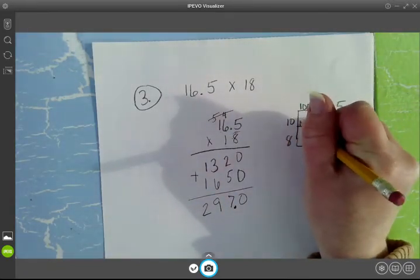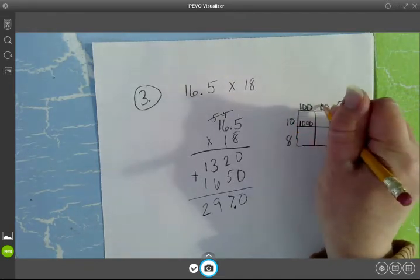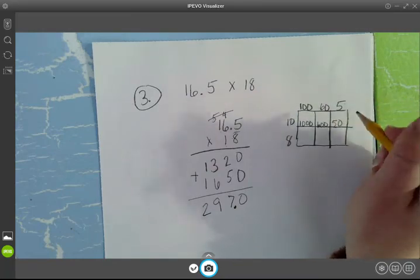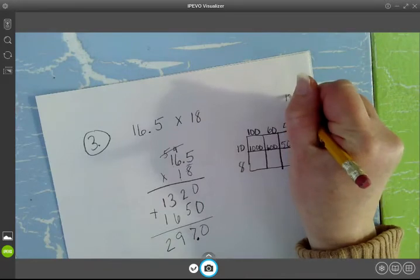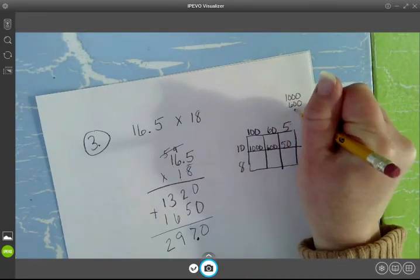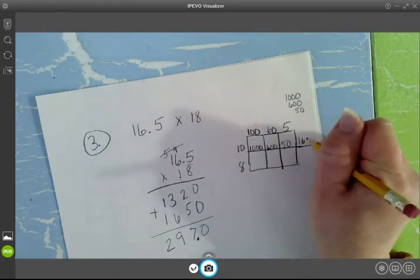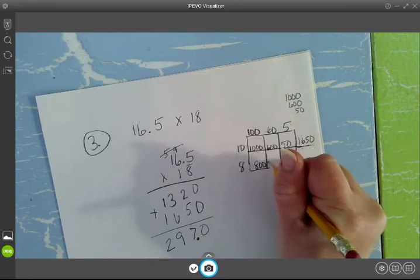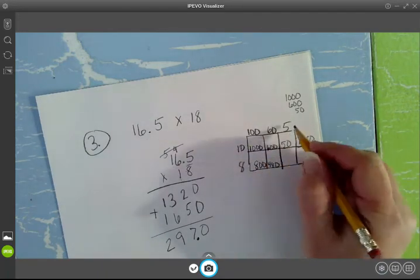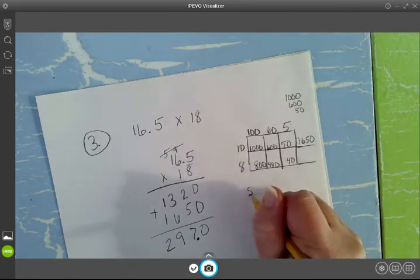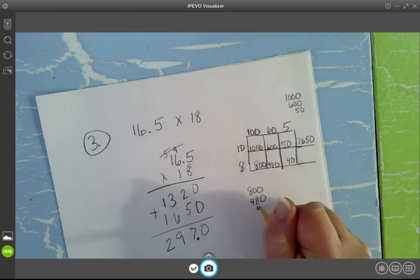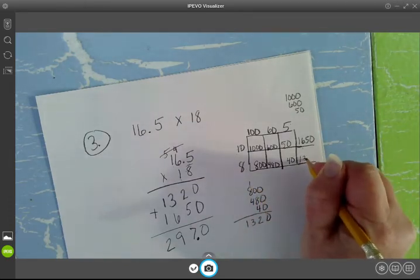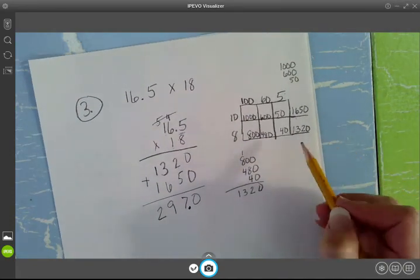1 times 1 is 1, 1, 2, 3 zeros. 1 times 6 is 6, 2 zeros. 10 times 5 or 1 times 5 with 1, 0. 1,000 plus 600 plus 50 gives me a grand total of 1, 6, 5, 0. 8 times 100 is 800. 8 times 6 is 48, plus my 0. 8 times 5 is 40. 800 plus 480 plus 40. 8 and 4 is 12. Carry my 1, 12, 13. 13, 20.